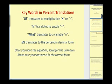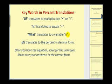The important part in setting up and solving an equation is going to be to identify the key words. 'Of' translates to multiplication. 'Is' translates to equals. 'What' or 'what number' translates to a variable — I used n here. And if we're given the percent, we need to translate that to its decimal form.